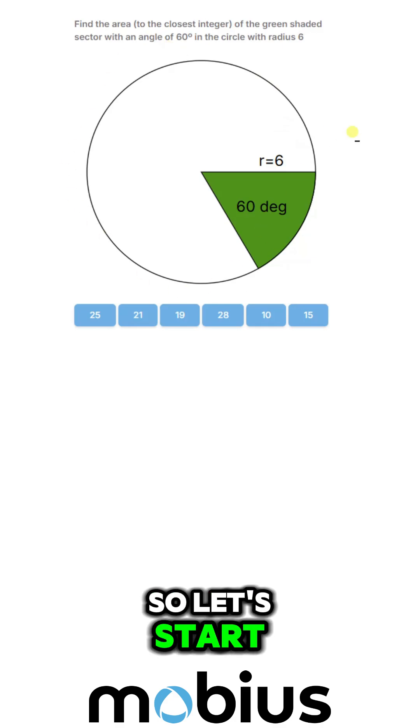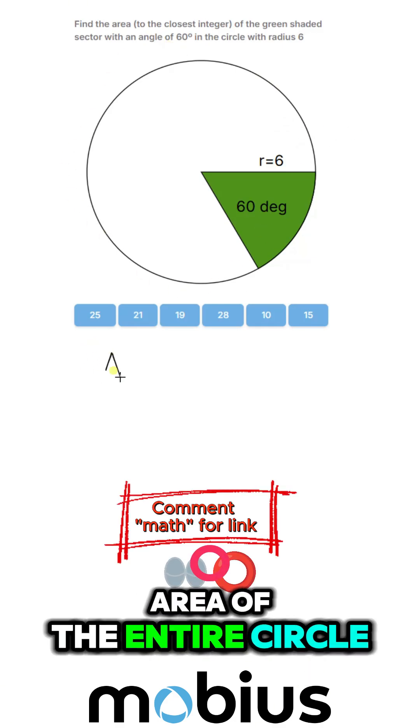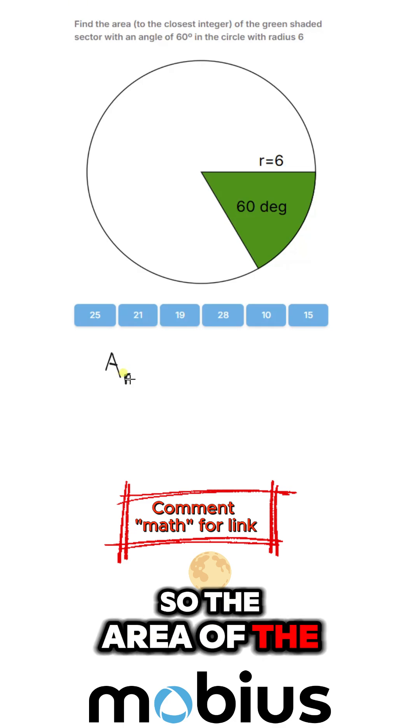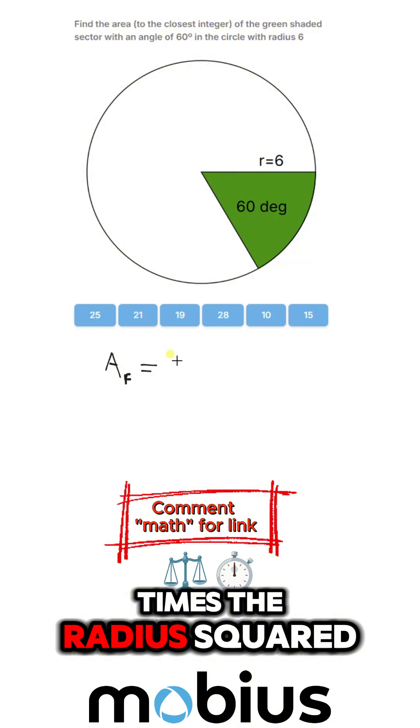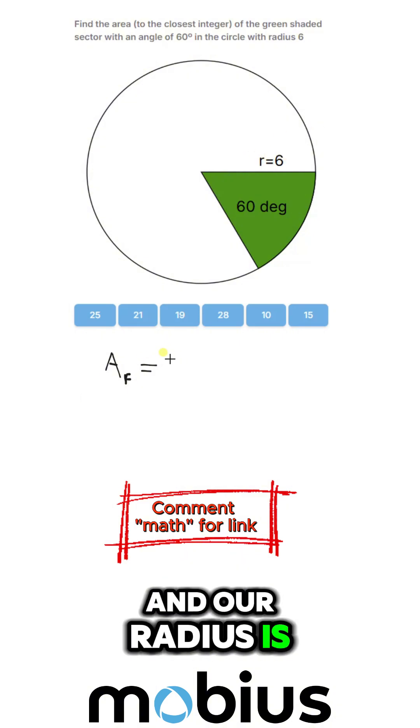So let's start by looking at the area of the entire circle. The area of the full circle is equal to π times the radius squared, and our radius is 6.